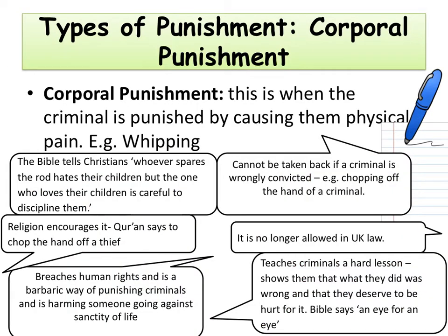The second type of punishment is corporal punishment. Make sure you note at least five bullet points again for arguments for and against. Corporal punishment is when the criminal is punished by causing physical pain to them, for example whipping. The first argument is from the Bible: whoever spares the rod hates their children, but one who loves their children is careful to discipline them. Another argument is that religion encourages it — the Quran says to chop off the hand of the thief: as for the thief, male or female, cut off their hand.